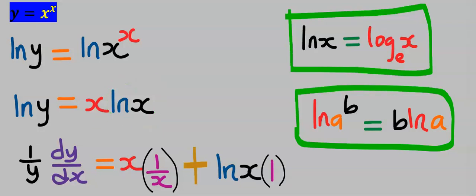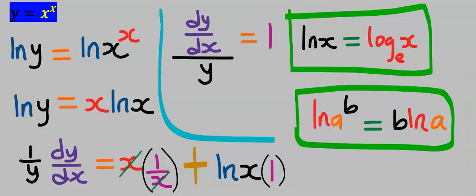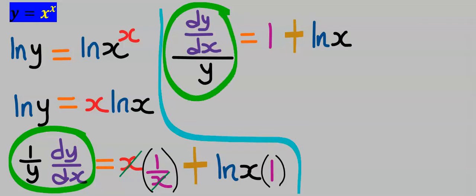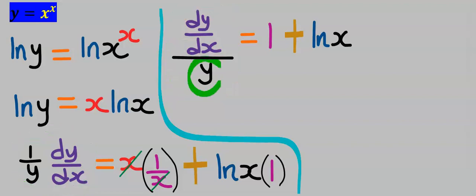Next, this x will cancel with this x. We can rewrite this expression, because dy/dx is one entity. Then the y at the denominator will move to the other side to multiply everything.